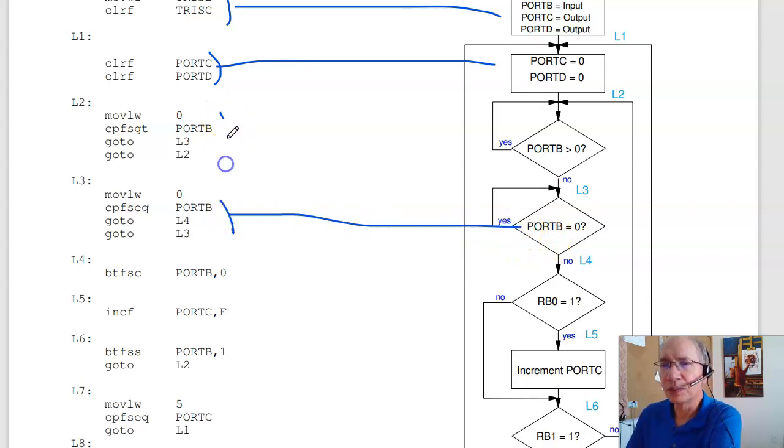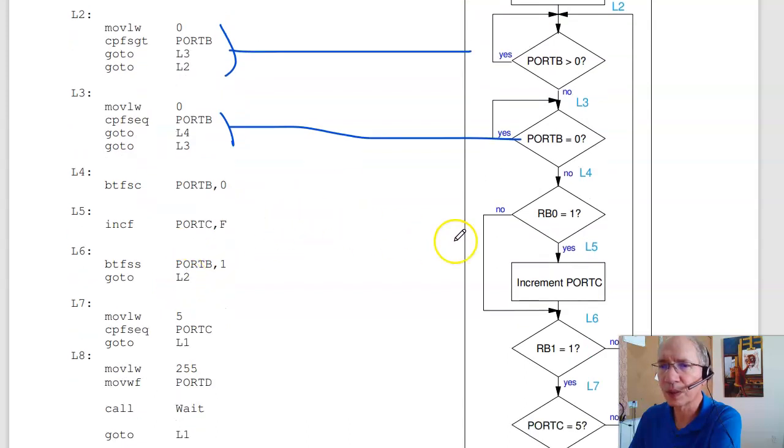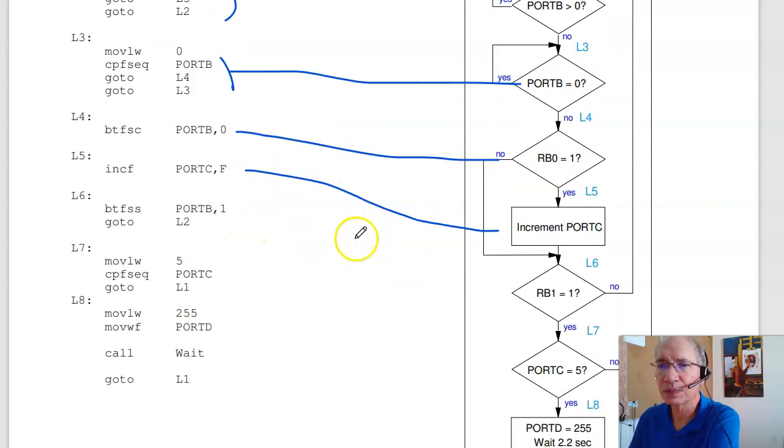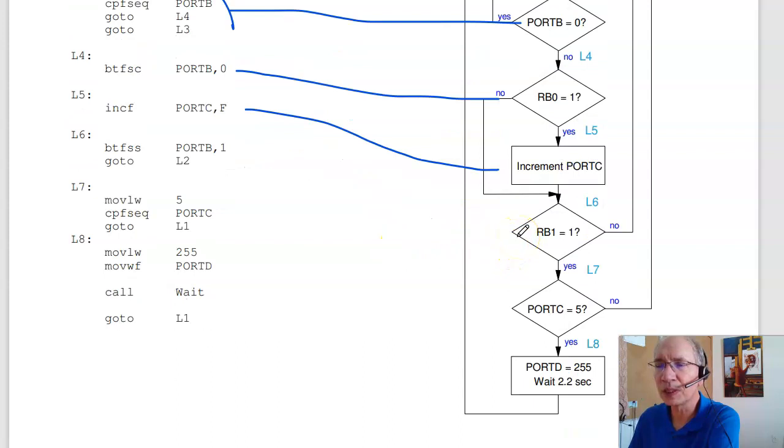This section of code. I want to check if port B is equal to 0. Move 0 to W, compare skip if equal. If it's equal, I keep on looping. Otherwise, go to label 4. Label 4 is the bit test. These are bytes, checking 8 bits. This is a bit test, checking a single bit. A single bit would be a bit test, skip if clear. If it's set, I don't skip. And I increment port C. I'll then check is port B, pin 1 equal to 1. Bit test, skip if set. If it's clear, I don't skip. I go back to label 2.